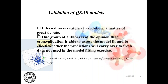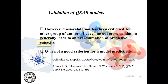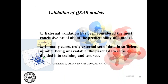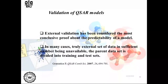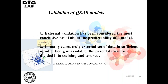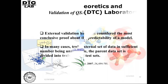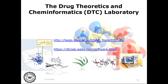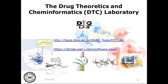There has been a great degree of debate between internal and external validation. Both internal and external validation are important: internal validation shows the internal robustness of the model based on training set compounds, and external validation shows the reliability of the model on unseen data. In general, external validation is considered as conclusive proof, but in some cases truly external data may not be available, and in those cases we divide the dataset into training and test sets. Now we will go to the tools available from our laboratory web page.